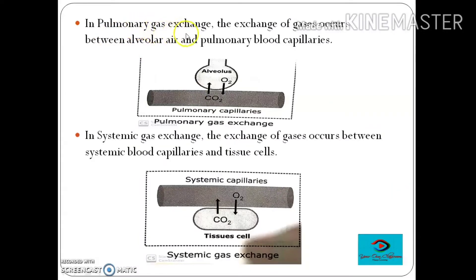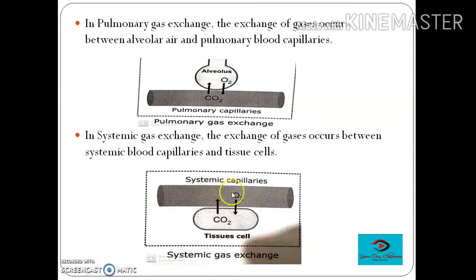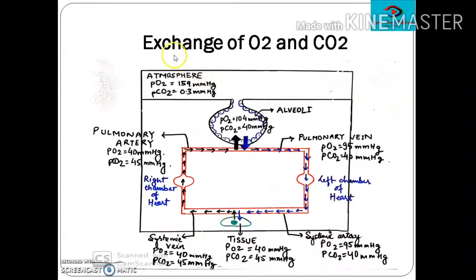Now let's look at pulmonary gas exchange. The exchange of gases occurs between alveolar air and pulmonary blood capillaries, as shown in this diagram of an alveolus and pulmonary capillaries. This exchange is also referred to as external respiration, while the exchange taking place at the level of systemic capillaries and tissue cells is referred to as internal respiration. Gases move from regions of higher partial pressure to regions of lower partial pressure.